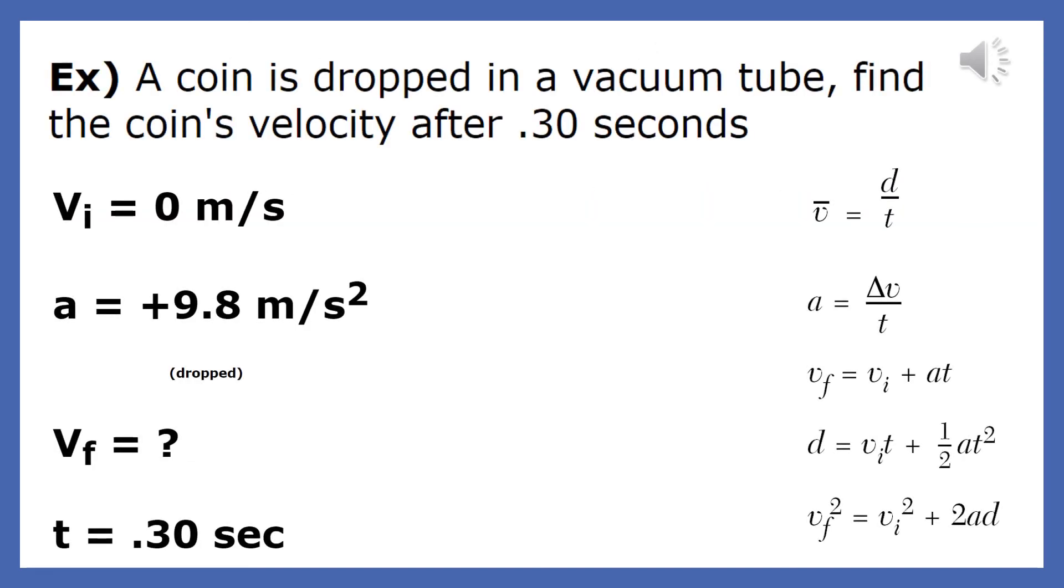Example 2, a coin is dropped in a vacuum tube. Find the coin's velocity after .30 seconds.